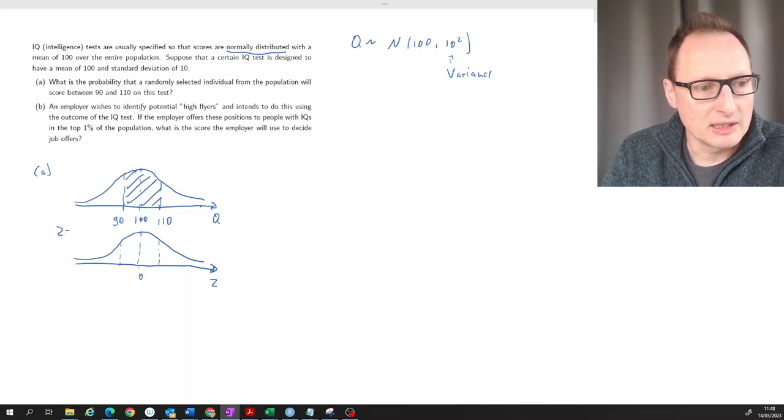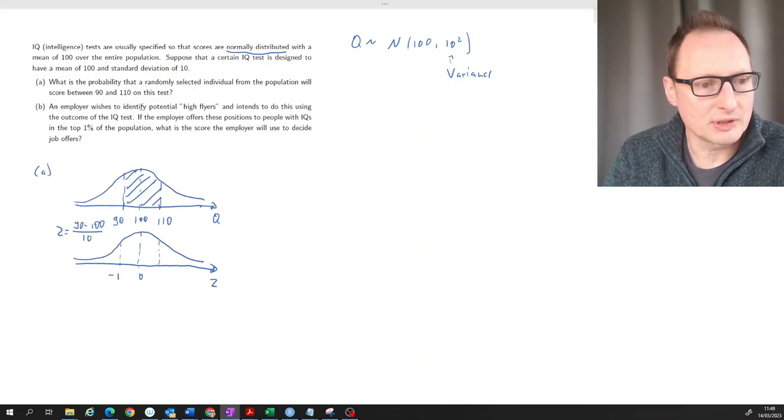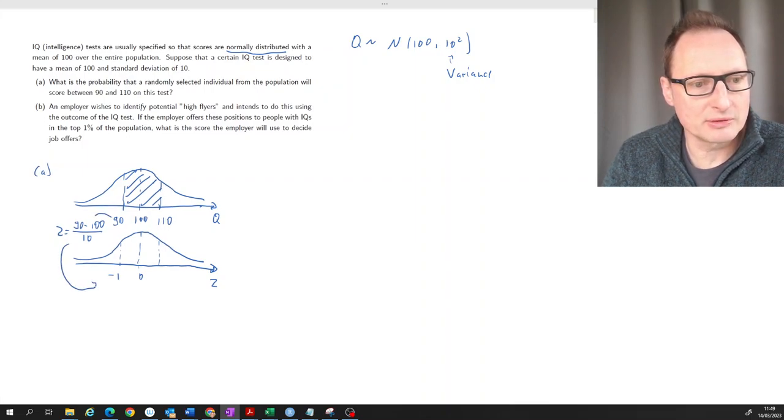In the Z world, we use our translation formula that is 90 minus the mean of 100 divided by the standard deviation, which is 10. So that is minus 1. So that 90 translates into minus 1. And that 110 translates into 110 minus 100 divided by 10. Well, that is 1. That value translates into 1.